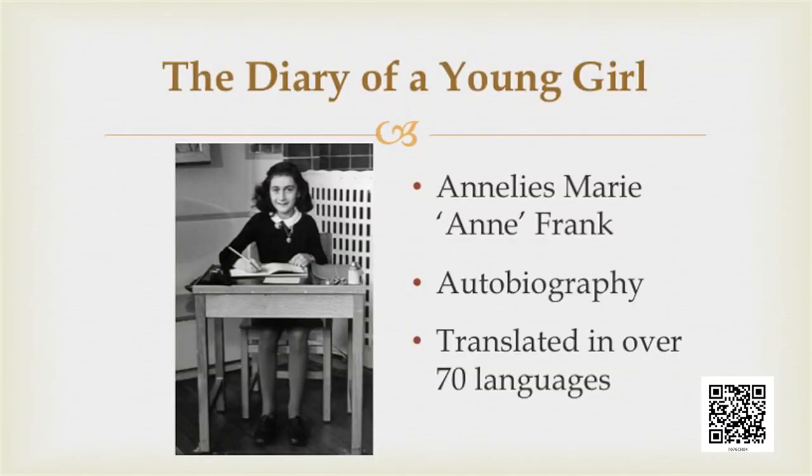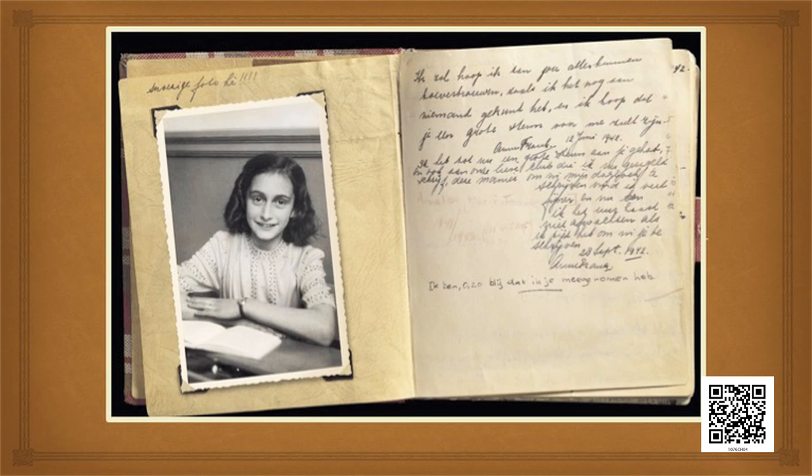Anne Frank's full name was Anneliese Mary Anne Frank, and her diary comes under the genre of autobiography. Her diary was a reflection of her ideas, her feelings, her emotions, and her observations about the world. She talked about her family, herself, and her friends. So there is an autobiographical element in it. The original title of the diary was The Diary of a Young Girl, and it is popularly known as The Diary of Anne Frank.